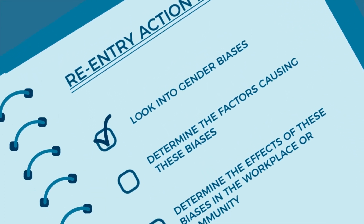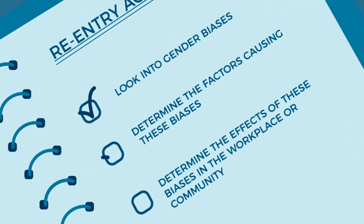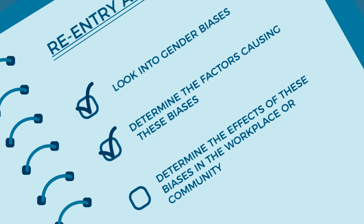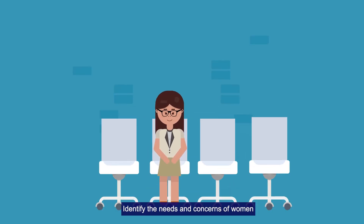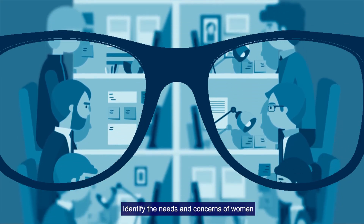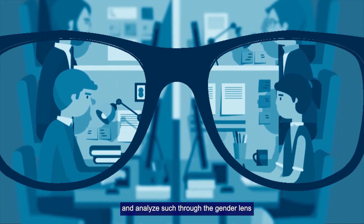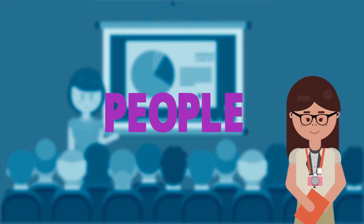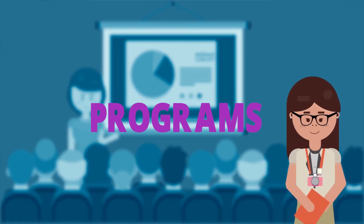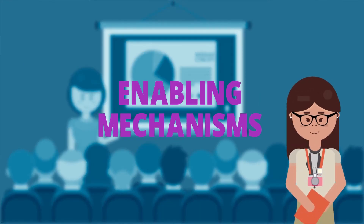The GED mainstreaming approach involves the following steps: Look into gender biases and determine the factors causing these and their effects in the workplace or community. Identify the needs and concerns of women, and analyze such through the gender lens, focusing on policies, people, programs, projects, and enabling mechanisms.